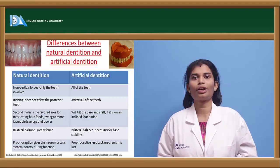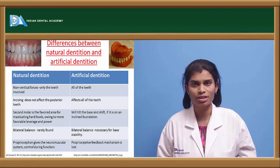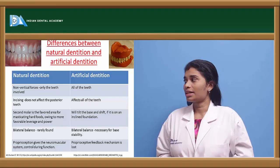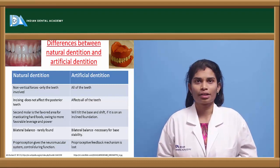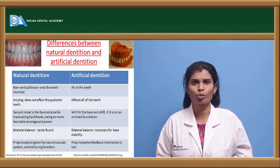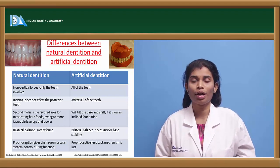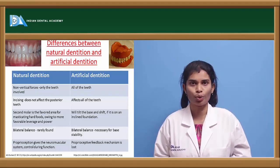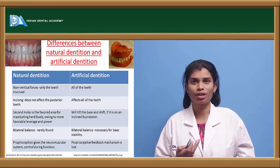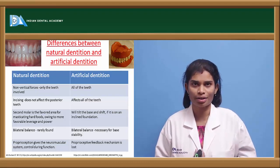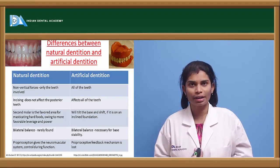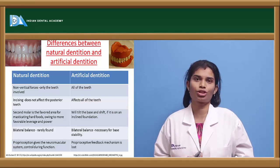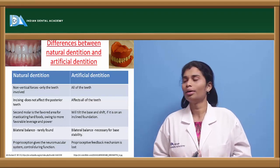Hence, it is always necessary — you have to take care during occlusion development stages to avoid all these things. Incising with natural teeth doesn't affect any other teeth; the function is normally carried out. But incising with a denture doesn't help — when you start incising with the denture, it gets dislodged from the posterior areas, because all the denture teeth are bonded to a single denture base. So incising is not permissible.